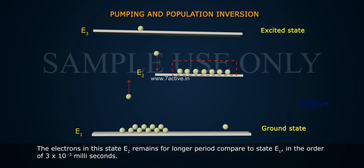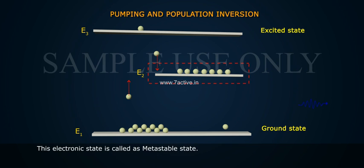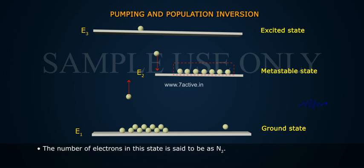The electrons in this state, E2 state, remains for longer period, compared to state E1, in the order of 3 into 10 power minus 3 milliseconds. This electronic state is called as metastable state. The number of electrons in this state is said to be as N2.